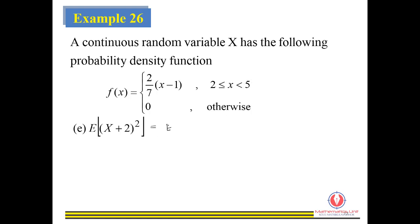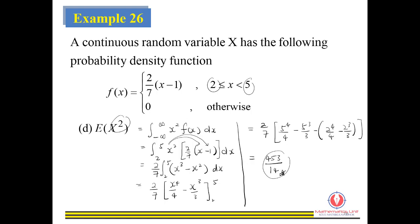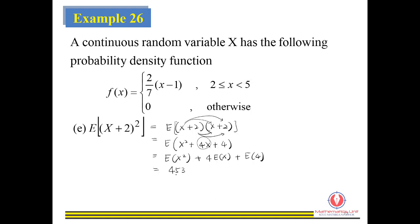To find E((X+2)²), we need to expand it first. Expanding gives X² plus 4X plus 4. Then we separate term by term: E(X²) plus E(4X) plus E(4). Note that E(4X) is actually 4·E(X). We substitute the answers for E(X²) and E(X) from previous results, multiply E(X) by 4, and finally get the answer.